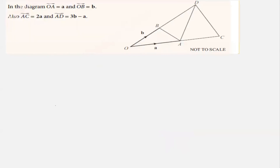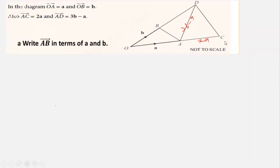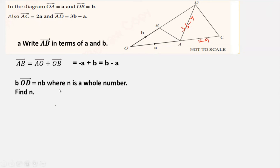One last question. OA = a, OB = b, AD = 3b − a, and AC = 2a. Find vector AB in terms of a and b. AB = AO + OB. Vector AO is going against, so −a. And OB = b. So AB = −a + b = b − a. Vector OD = OA + AD. OA = a plus AD = 3b − a. Simplifying: a + 3b − a = 3b. Comparing OD = nb: n = 3, which is a whole number.